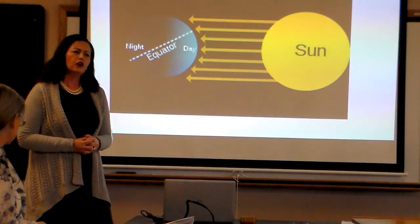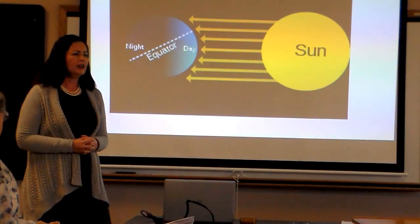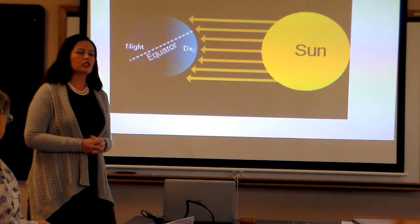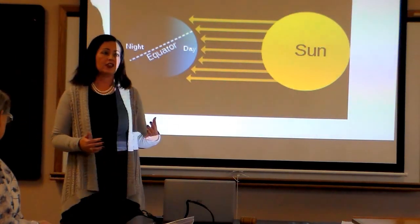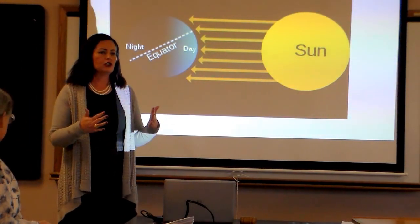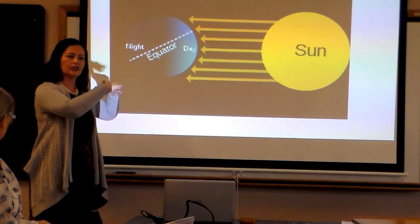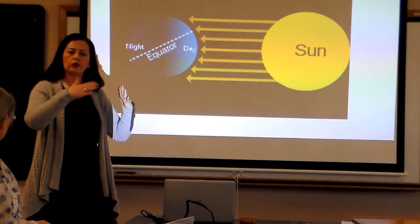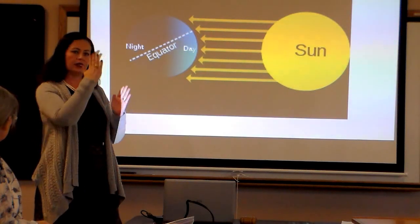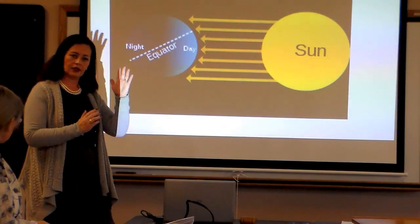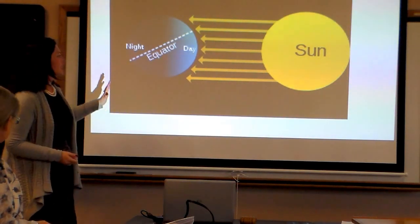Now, the other fact that I want to explain is why we have our sunrise and sunset so quick. All the countries located on the equator line have a quick sunset because the sun sets vertically to the horizon.